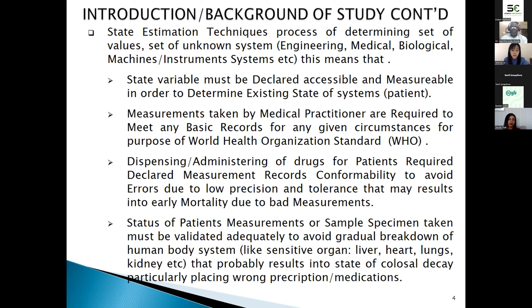Dispensing and administering drugs for patient requirements demands declared measurement record conformability to avoid error due to low precision and tolerance, which may result in early mortality due to bad measurement. Measurements collected from patients may carry errors attributed to calibration or aging of instruments, which is tantamount to bad measurement. Such measurements, if relied upon for prescribing drugs, may result in either overdose or underdose, which are not comfortable for the body care system.